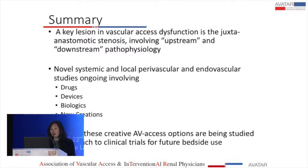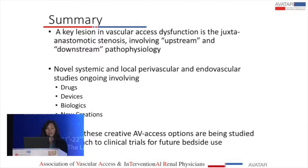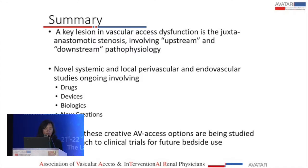To end: a key lesion in vascular access dysfunction is the juxtanastomotic stenosis involving both upstream and downstream pathophysiology. Novel systemic, local perivascular, and endovascular studies are ongoing, looking at drugs, devices, biologics, and new creations. Many of these creative AV access options are being studied from bench to clinical trials for future use at the bedside. Thank you very much.